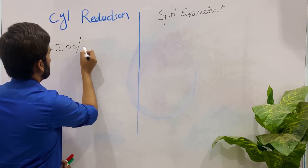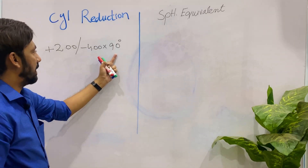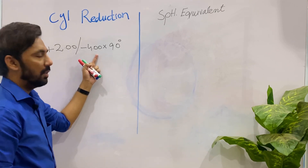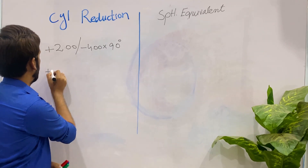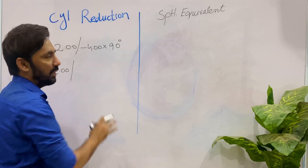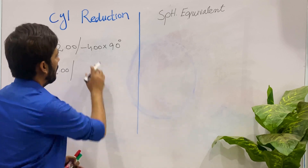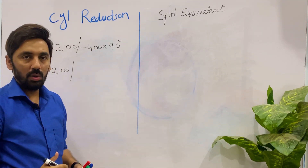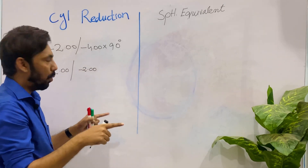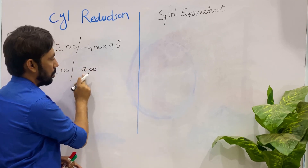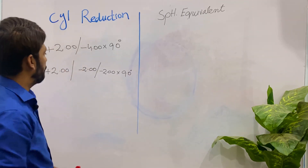Our next prescription is plus two spherical with minus four cylinder at 90 degrees axis. Our patient is not comfortable with the high cylinder of minus four, so we apply the cylindrical reduction procedure. Step one: decide how much cylinder you want to reduce — I want to reduce minus two. So we split minus four into two parts: minus two to reduce and minus two to prescribe, both at 90 degrees.